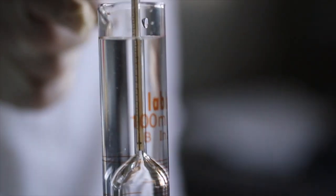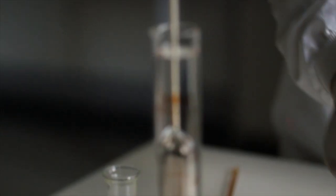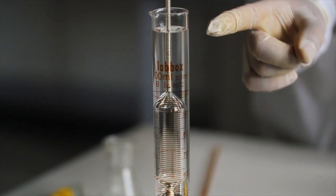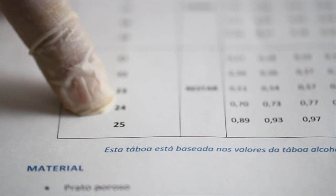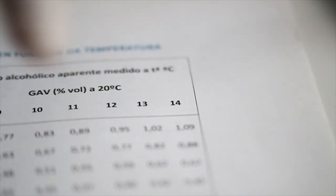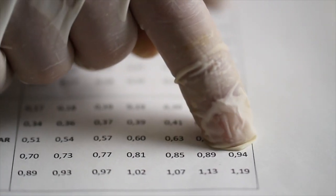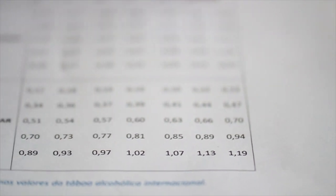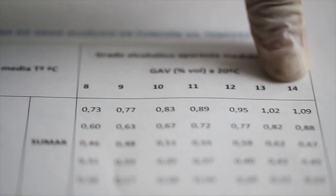Os graus alcohólicos aparentes que se leen é de 14 graus. Medimos 14 graus alcohólicos aparentes, pero temos que facer unha corrección a 24 graus centígrados. Entón, temos que facer coa axuda da táboa unha corrección dos 14 graus alcohólicos aparentes para restarlle 0,94, o que nos dá un grau alcohólico real de 13,06, que é o grau alcohólico que tiña este viño.